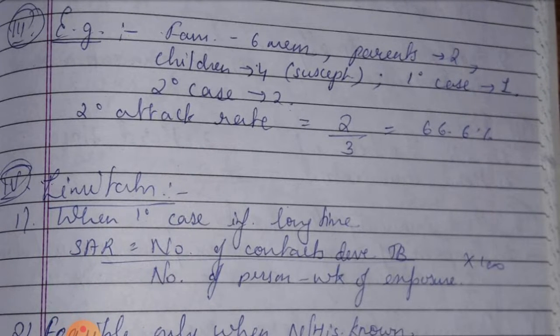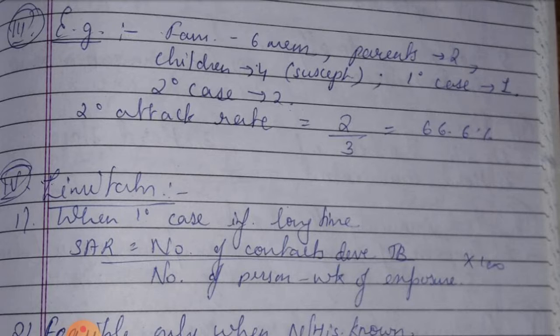Third, the example is a family of one to six members. There are two parents and four children who are susceptible to measles. The primary case is measles.